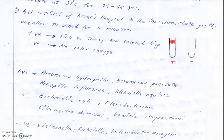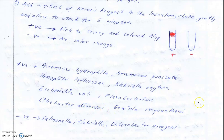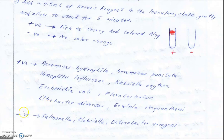Indole test positive organisms include: Aeromonas hydrophila, Aeromonas punctata, Haemophilus influenzae, Klebsiella oxytoca, Escherichia coli, Flavobacterium, Citrobacter diversus, and Erwinia. Indole test negative organisms include Salmonella, Klebsiella pneumoniae, Enterobacter, and Aerogenes.